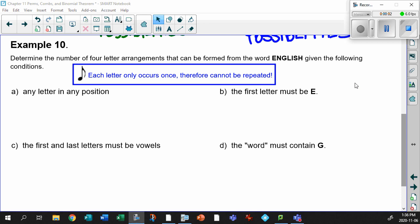Are you getting the hang of and and or yet? Well, let's talk about a few more restrictions that we can throw on this. Boy, oh boy, oh boy, I tell you. Look at question number 10. It says, determine the number of four letter arrangements that could be formed from the word English given the following conditions.